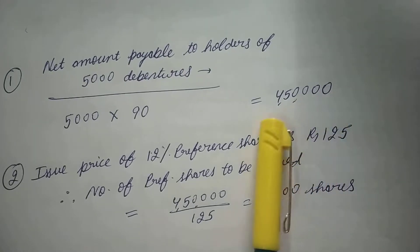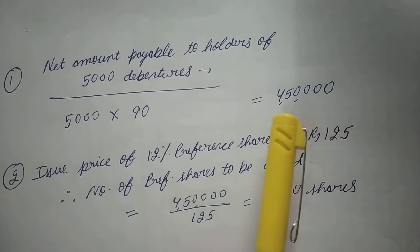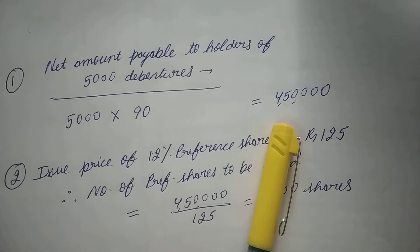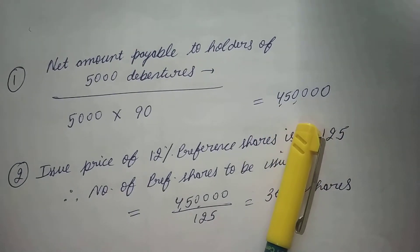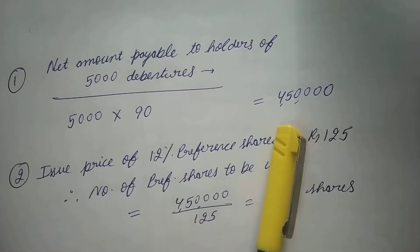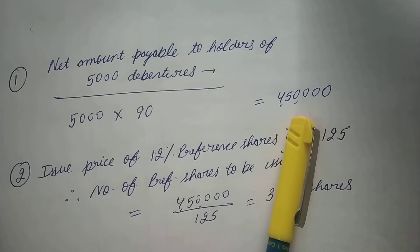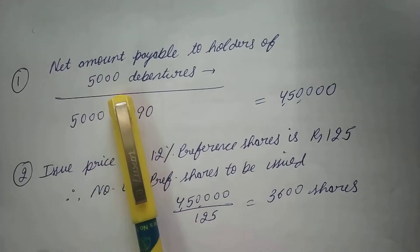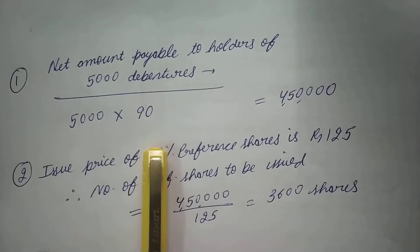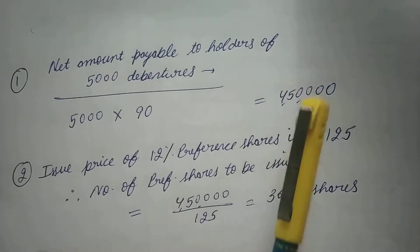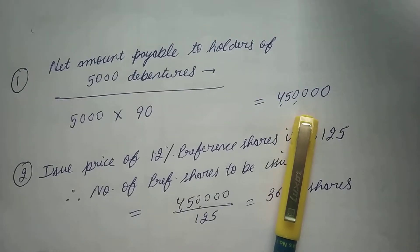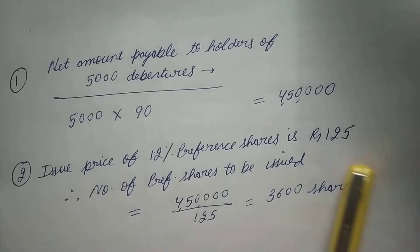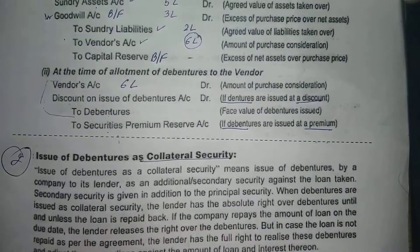This 4,50,000 is the amount which has to be paid to them — not in cash, but in the form of 12% Preference Shares. These preference shares are to be issued at a premium of 125. So you will not divide by 100, but divide by 125. 4,50,000 divided by 125 gives 3,600 shares. That is how many preference shares we shall issue.